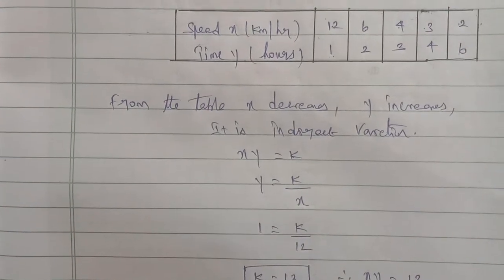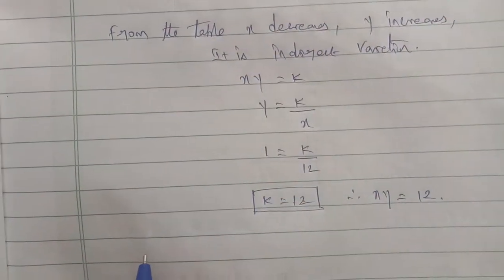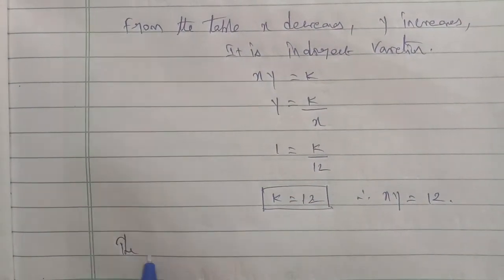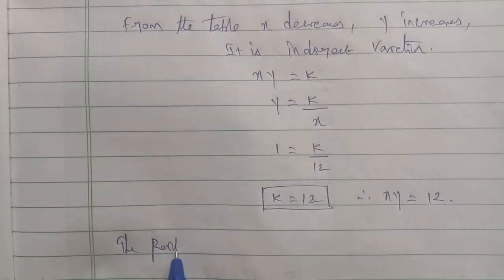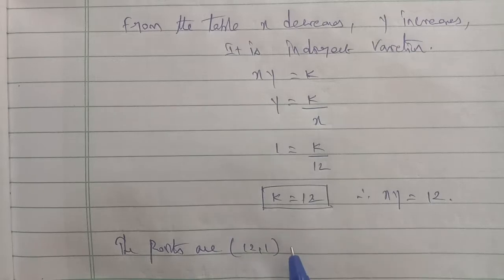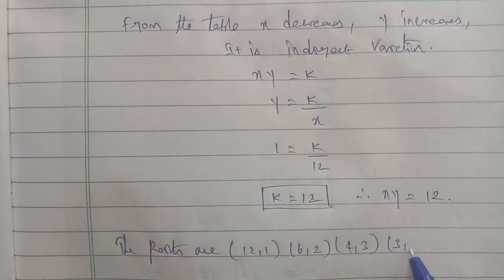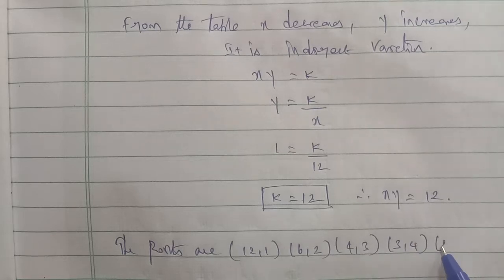The points are: 12 comma 1, 6 comma 2, 4 comma 3, 3 comma 4, and 2 comma 6.